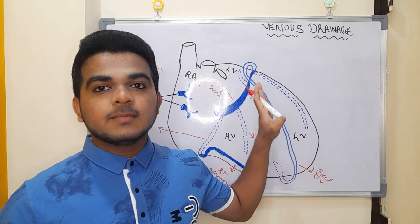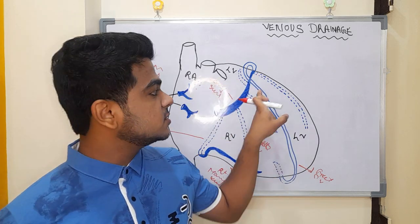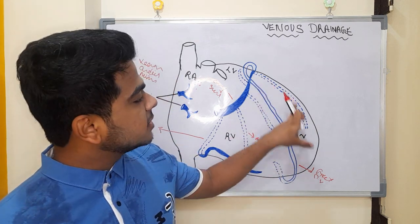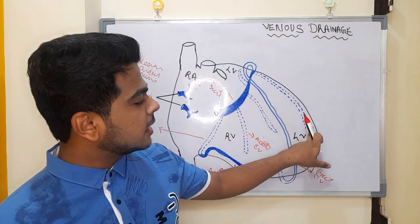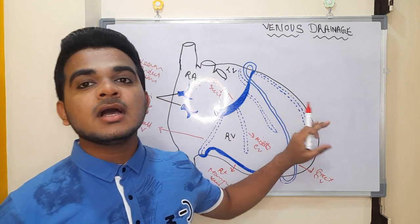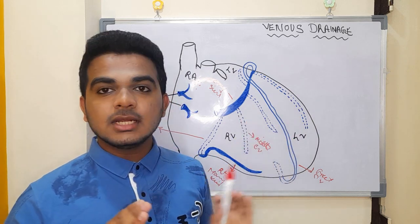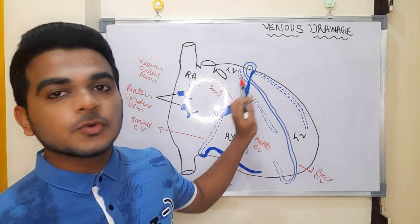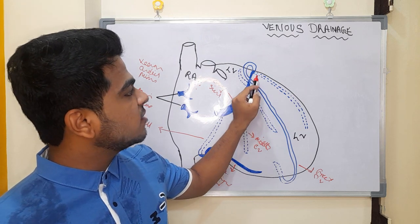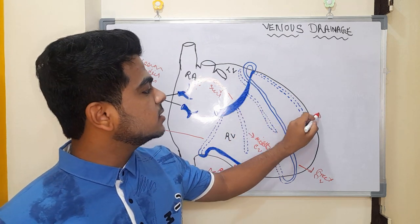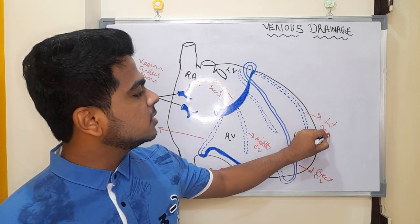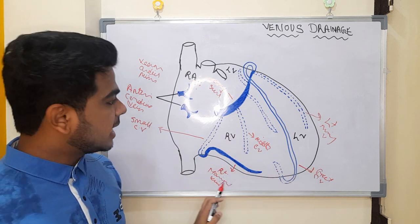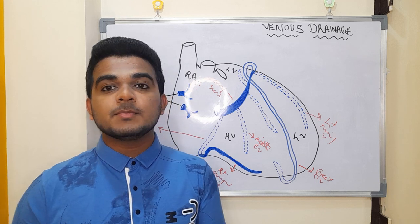The left marginal artery is present anteriorly, but the left marginal vein is present posteriorly, because on the anterior surface it anastomoses with the right marginal vein and then goes posteriorly. So the left marginal vein is present posteriorly and drains into the left portion of the coronary sinus.